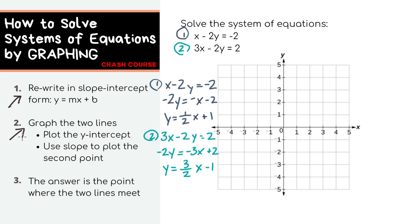Next step, let's graph. For the first equation, we'll plot the y-intercept, which we already know is this plus 1 since it's in slope-intercept form. Now use the slope to plot the second point.